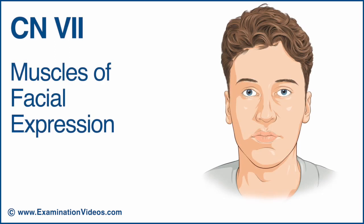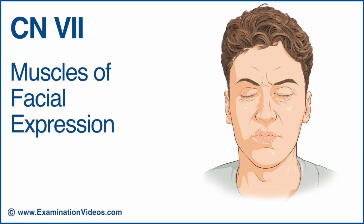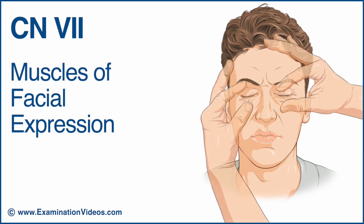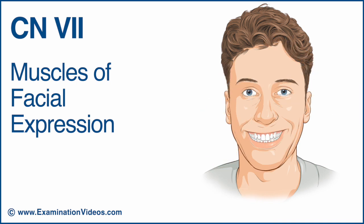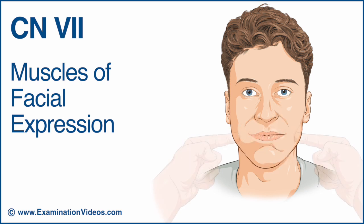To test cranial nerve 7, examine the muscles of facial expression. Ask the patient to raise their eyebrows and observe the wrinkling of the forehead, comparing each side. Ask the patient to close their eyes tightly while you attempt to open them, and compare the strength of their resistance on each side. Ask the patient to smile and show their teeth and observe for symmetry. Finally, ask the patient to blow out their cheeks and maintain this while you apply pressure on both cheeks. Compare the strength of their resistance on each side.